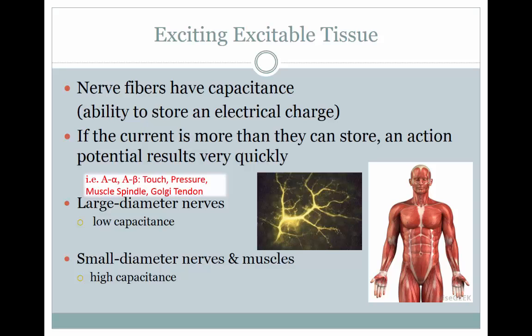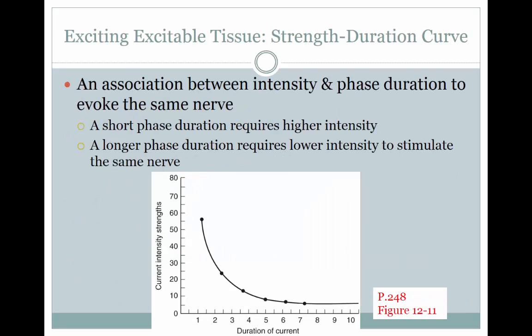Small diameter nerves and muscles have a high capacitance, or the ability to store an electrical charge. Examples of small diameter nerves are the A-delta and the C fibers, which respond to pain signals. With the ability to excite excitable tissues, there is what's called a strength-duration curve.